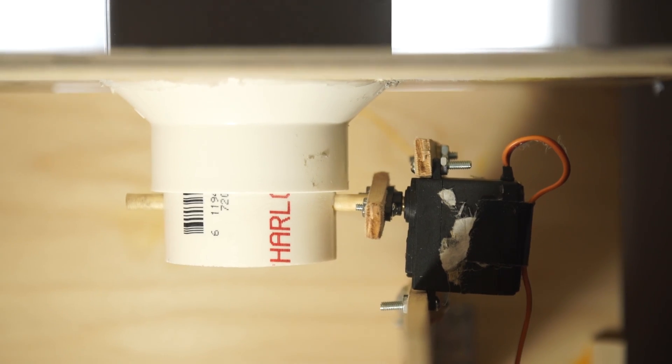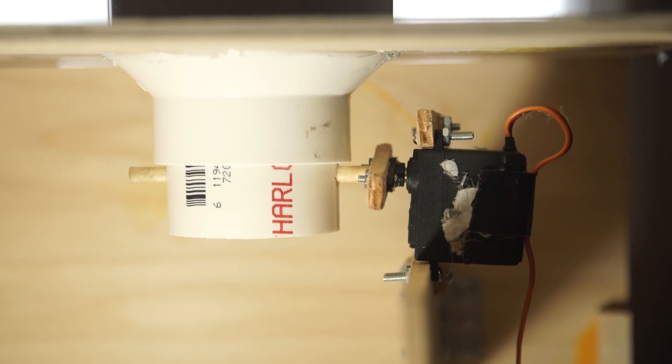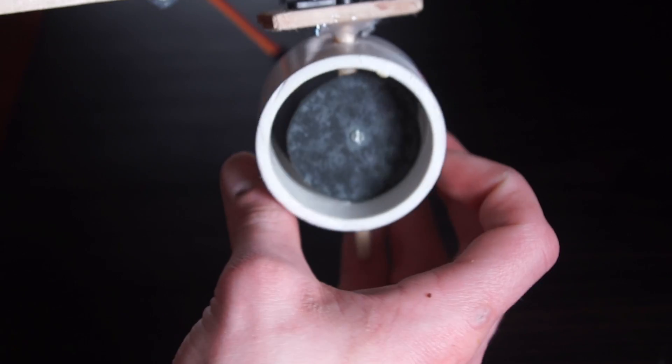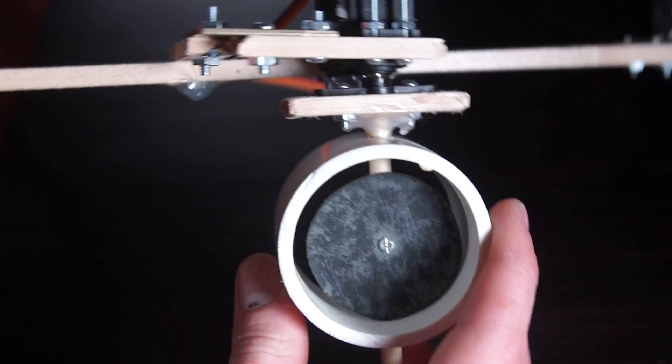Then I drilled a hole on the other side of the wood and epoxied a quarter inch wooden dowel into the hole and let it dry for about an hour. I made a plastic disc that was a little less than the diameter of the PVC and mounted it on the wooden dowel using a small nut and bolt.